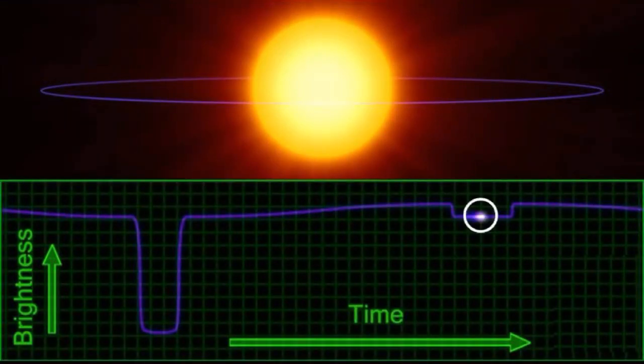And then once the planet disappears behind its star, the flux drops slightly since we now have the total flux of the star without any additional flux from the hidden planet.